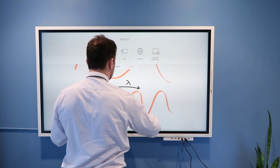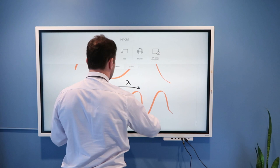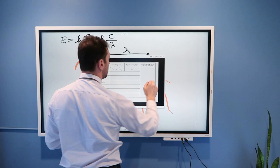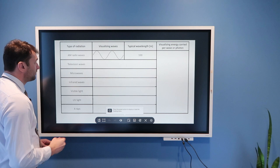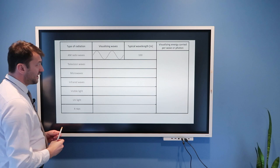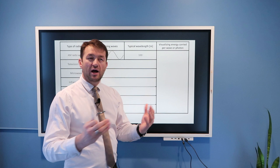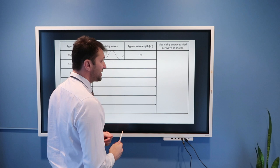Now, let us look into nicer graphs compared to what I plotted here and discuss this topic further. In this table, the first column is type of radiation. So we have, for example, AM radio waves. Then this column is something that should help you to visualize wavelength of these waves, and then typical wavelength, and then we will visualize energy that is carried by wave or photon of light.